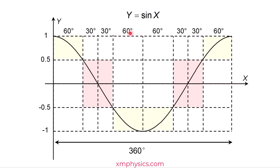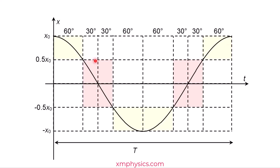Therefore the intervals across the full sine cycle are: 60, 30, 30, 60, 60, 30, 30, and 60 degrees. Now going back to our simple harmonic motion, which swings between negative x-naught and x-naught with one period per cycle — to go from the extreme position to the half amplitude position is 60 degrees out of 360 degrees, which is one-sixth of a period. To go from the half amplitude position to the equilibrium position is 30 degrees out of 360 degrees, which is one-twelfth of a period.